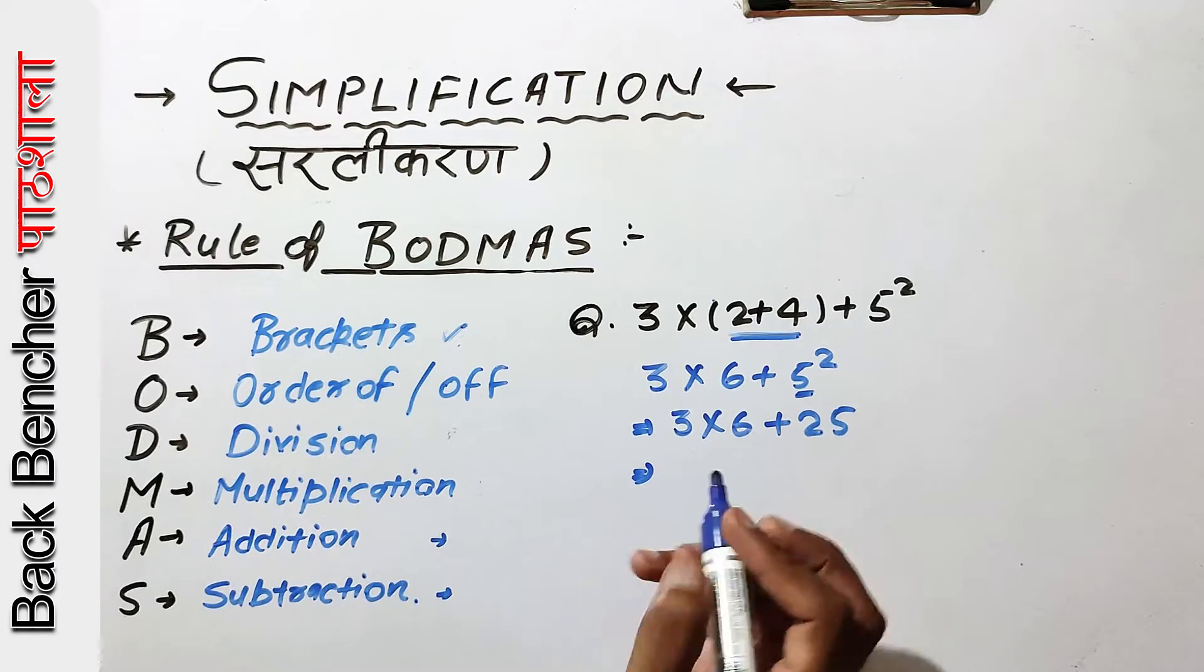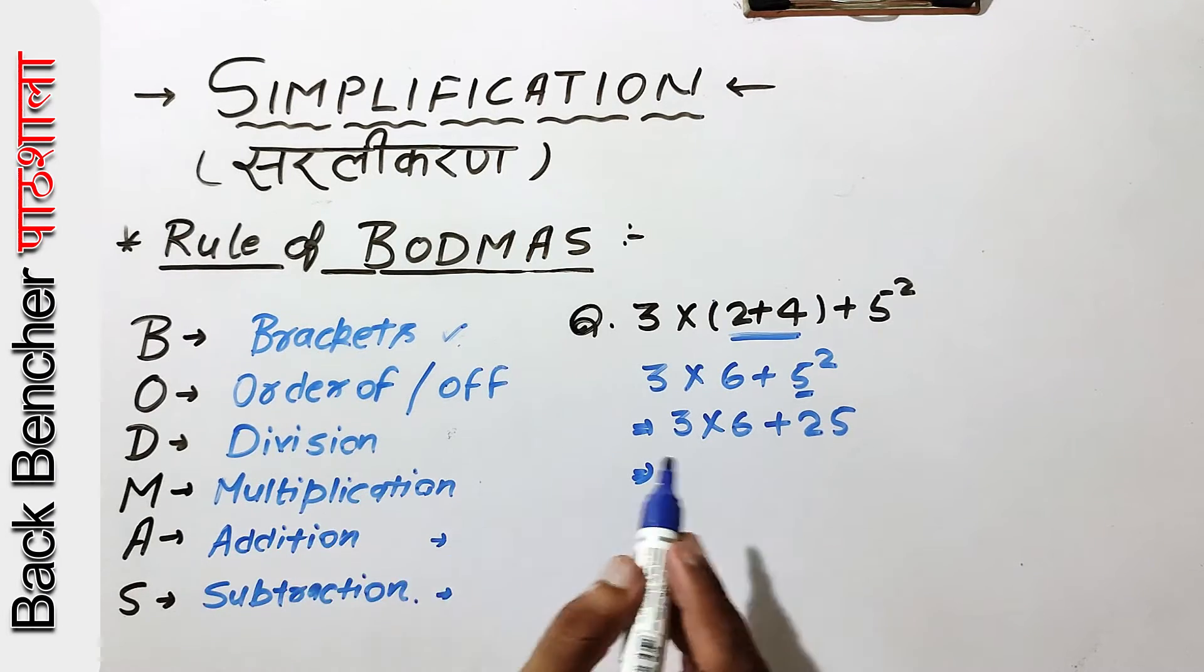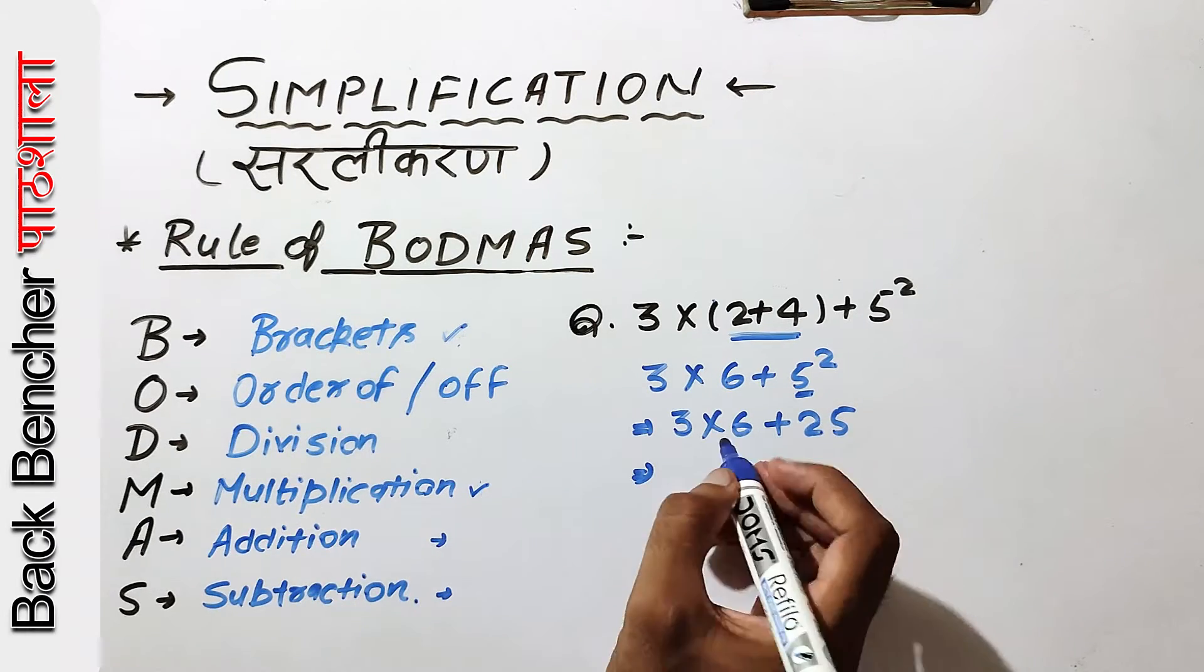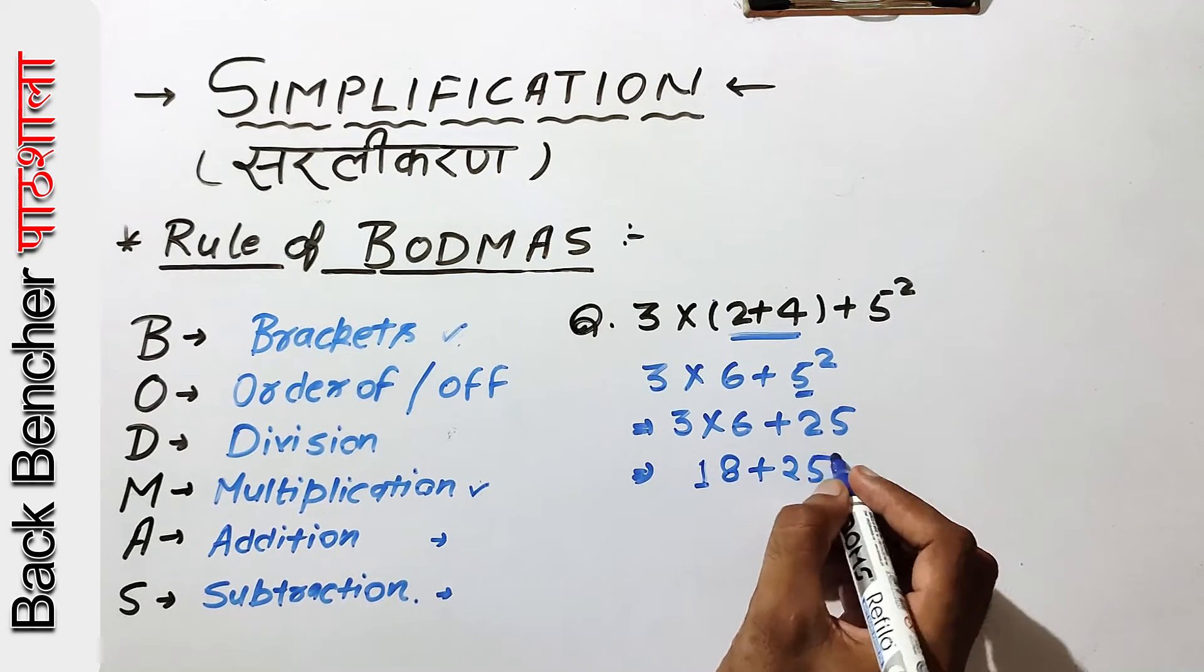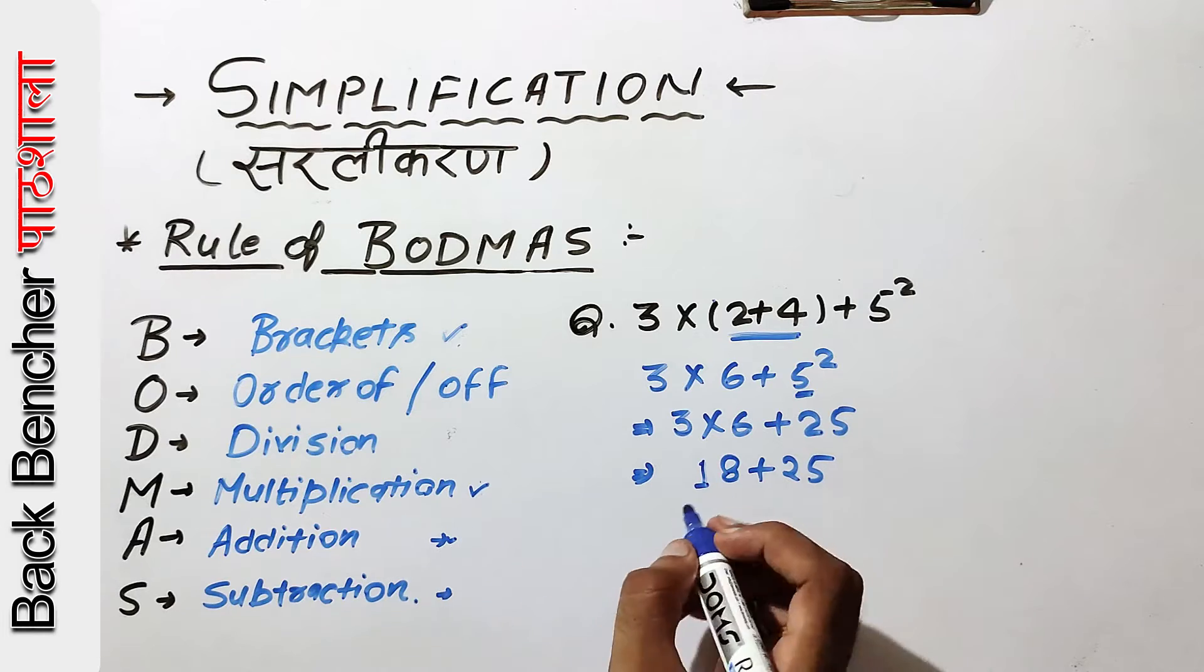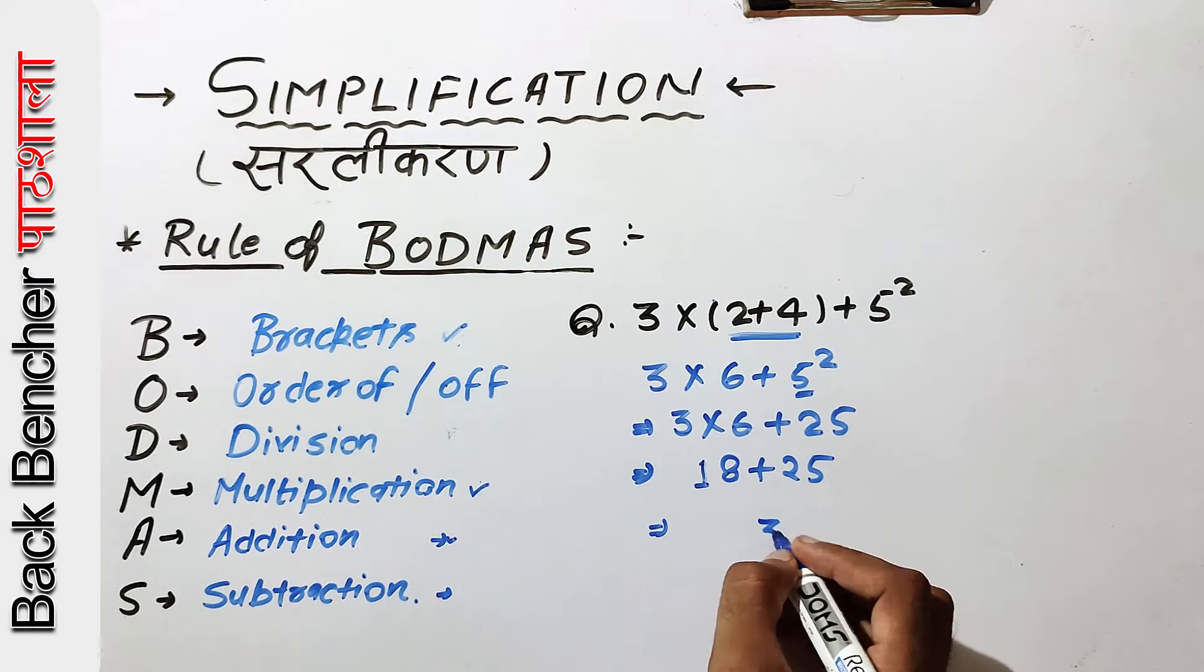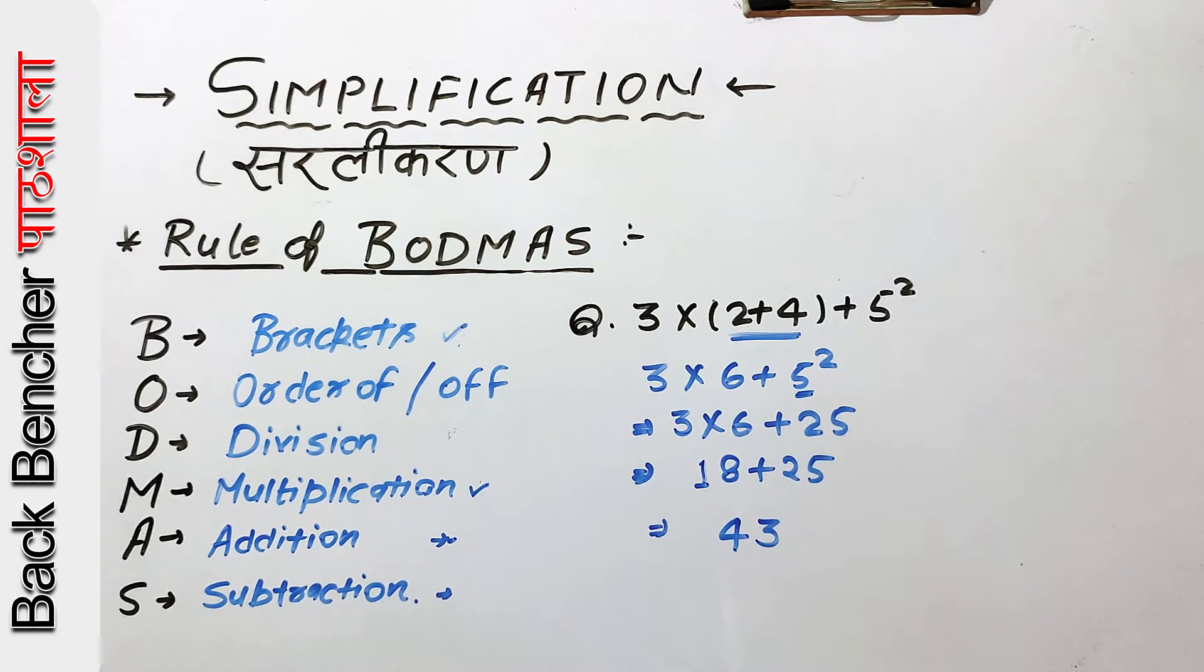We have division, so we will do this. 18 plus 25. Left is Addition. This is our 40.